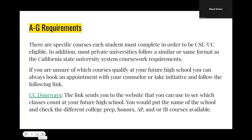The first part we're going to cover today would be the A through G requirements that the majority of universities look at — specifically the California State University system and the University of California system. They utilize the A through G's for their eligibility purposes, and it is very important for students and parents to understand the ins and outs of it, as the majority of these classes are college prep, honors, AP, and IB courses offered through your schools. If you're unsure of what courses are offered at your school, you would want to utilize UC Doorways, which is linked on the presentation.